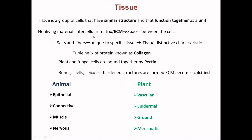Tissue is a group of cells with similar structure that function together as a unit. The non-living material present between the cells is called the intercellular or extracellular matrix, and its components like salts and fibers are unique to specific tissues. An example is the triple helix protein collagen in animals; in plants, an example is pectin. Hardened structures are formed from the extracellular matrix when it becomes calcified. There are four types of animal tissues: epithelial, connective tissue, muscle, and nervous tissue. In plants, there are epidermal, ground, and vascular tissues.